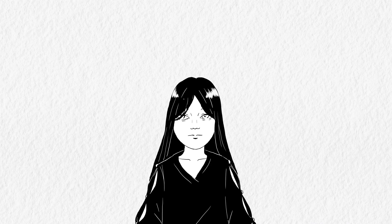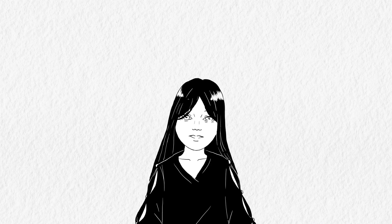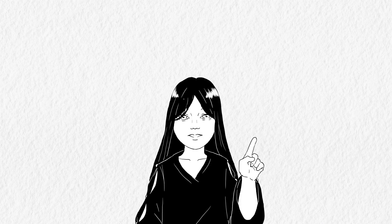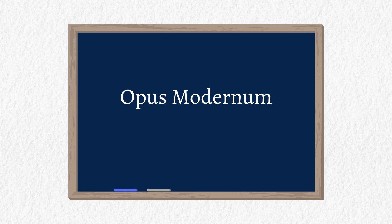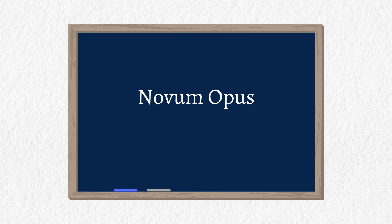So if Gothic was not a term used in the Middle Ages, then how did people call this style? Well, it didn't exactly have an official name. It was sometimes called Opus Francigenum, which means Frankish work in Latin, or sometimes called Opus Modernum, or Modern work, and Novum Opus meaning New work.